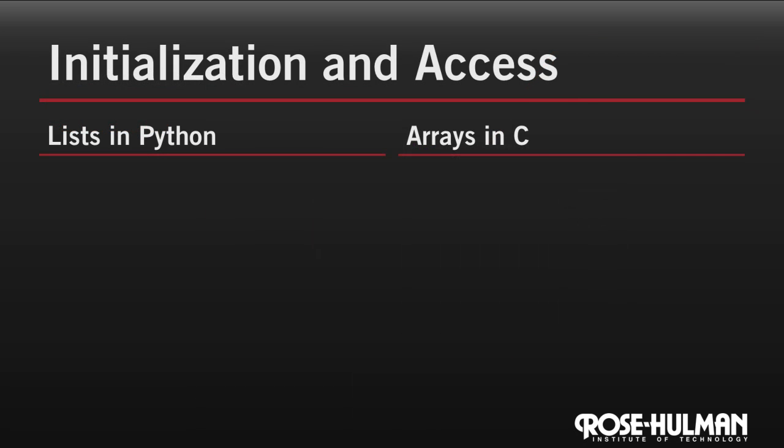Let's look at how we can initialize arrays and access them in C and compare that to lists in Python. To initialize a list in Python, we use square brackets. So this says that the variable A gets the list containing the integers one, three, and five.